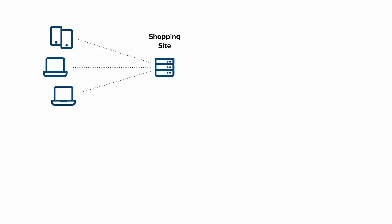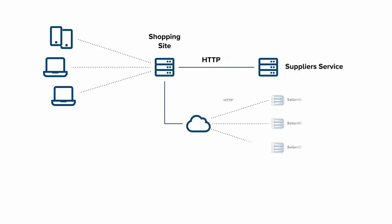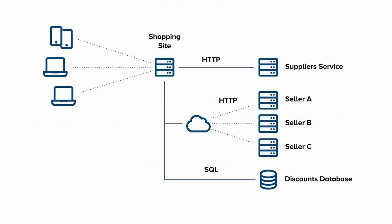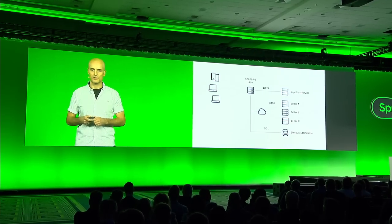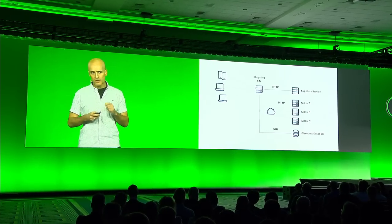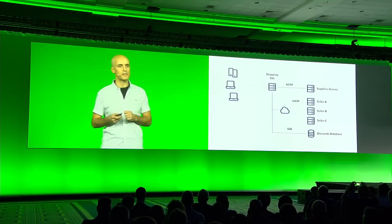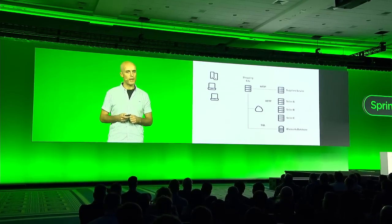Suppose we have a shopping site. One of the things we may need to do for a given product is to look up a list of suppliers who can provide this product. For each supplier, we will make an HTTP call to obtain product price info. And finally, we may also query a local database to find any discounts we've negotiated with those suppliers. I know microservice experts will say we shouldn't be making all these calls immediately — and they'd be correct — however, in the real world we don't always have a choice over what external APIs we need to call.